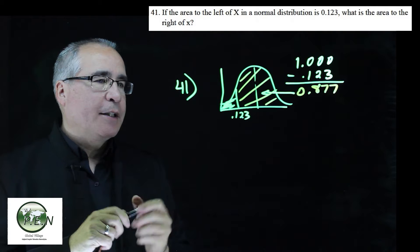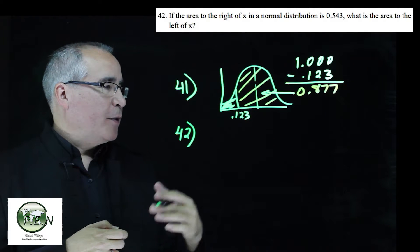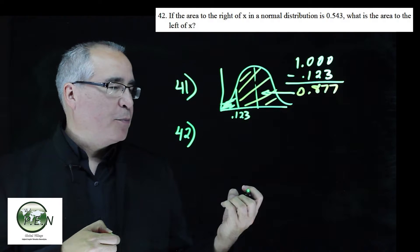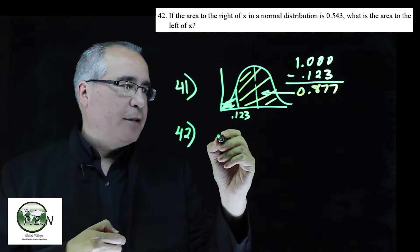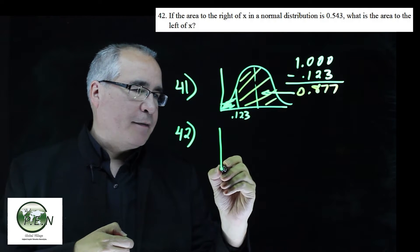For 42, it's a similar type question. Except that we're told that a distribution has area 0.543, the area to the right of that amount.